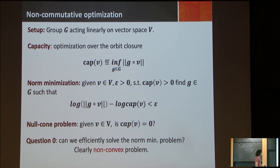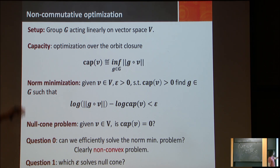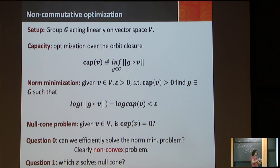And the null cone problem is: given V in the vector space, is the capacity equal to zero or not? A key question is: can we efficiently solve this norm minimization problem? This problem is clearly non-convex. The question is: for which epsilon would it be enough to distinguish if we're in the null cone or not? Is there a gap — if I'm zero, I can go all the way to zero; if not, I won't go below some particular epsilon?